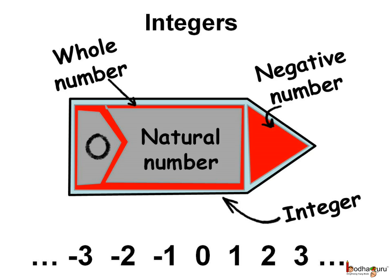And when we add the negatives of the natural numbers with the whole numbers, the collection is called the integers. Thus the integers are minus 3, minus 2, minus 1, 0, 1, 2, 3, etc.